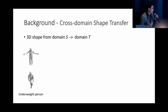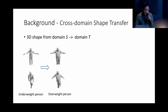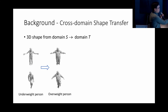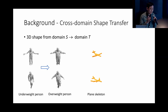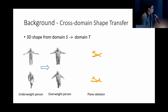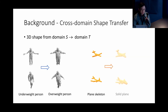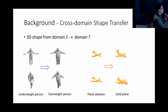The domains don't have to be human — they can be substantially different as long as they share some correspondence. For instance, on the right is something like a plant skeleton — the medial axis of a plant — and we can transfer from that plant skeleton to the solid shape of the plant. This has been worked on for decades. Conventionally, we explicitly find correspondences — such as fingertip to fingertip — to map from underweight to overweight, then craft a mapping function.